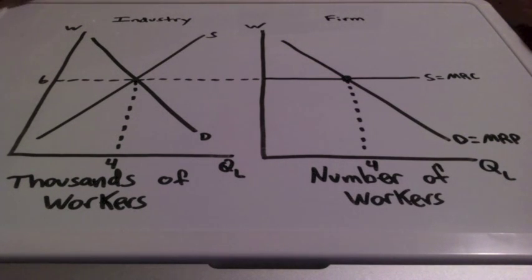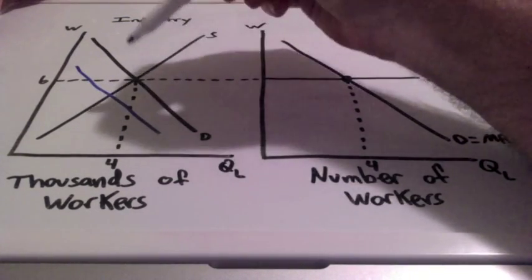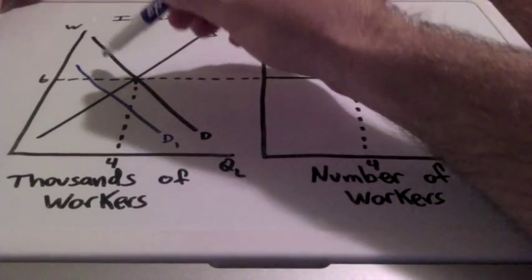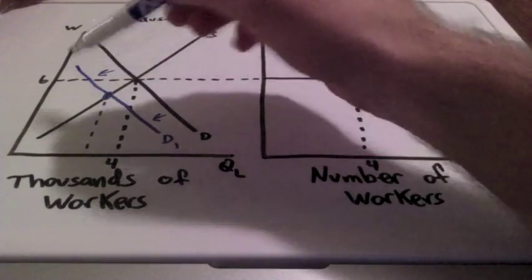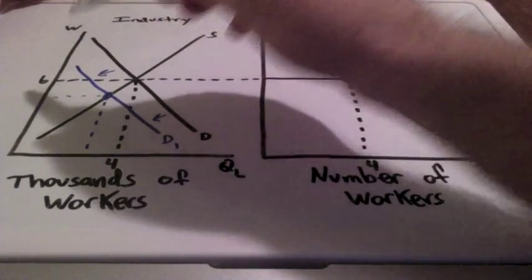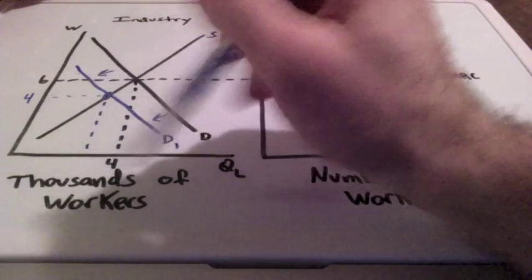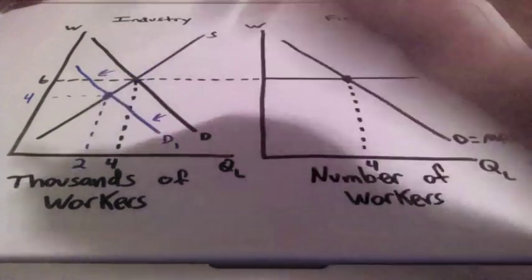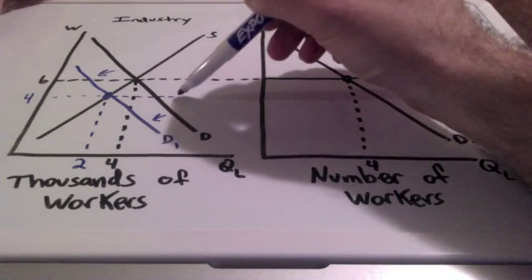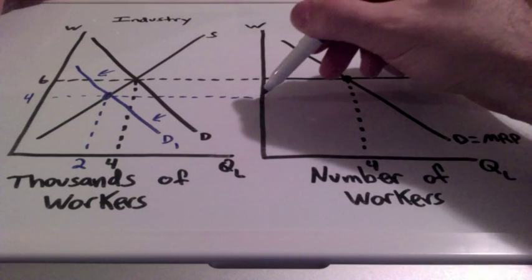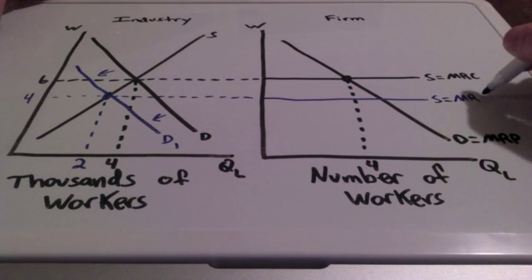Let's say that the industry decreases their demand for labor. The demand curve will shift to the left, from D to D1. Both wages and the quantity supplied of labor will go down — wages go down from $6 to $4, and the thousands of workers goes down from 4,000 to 2,000. The industry is going to relay this message to the individual firms, so our supply of labor will have a new line equal to marginal resource cost 1.